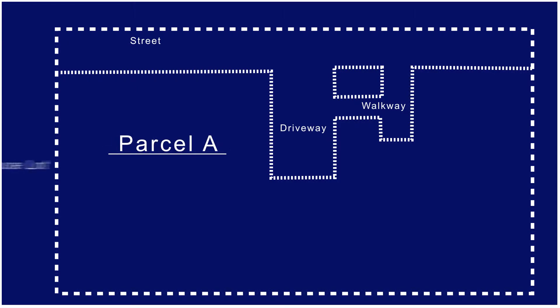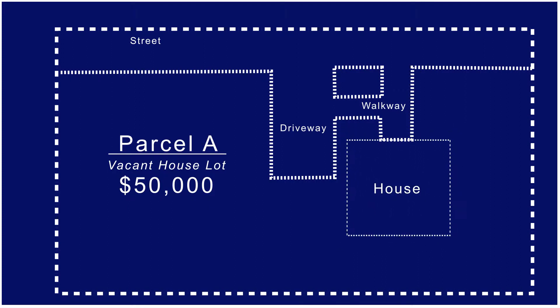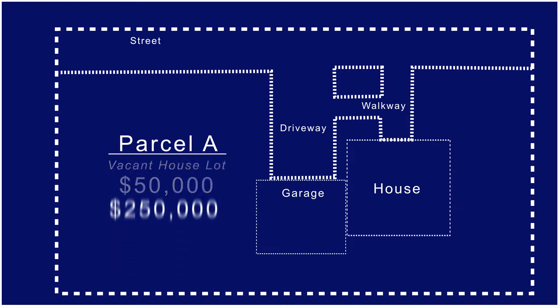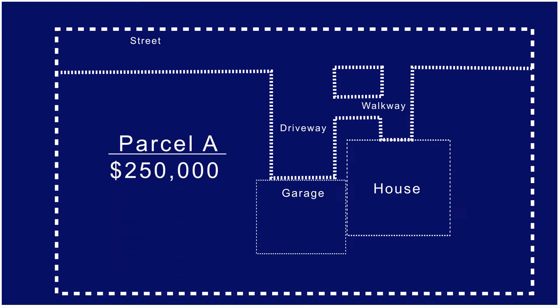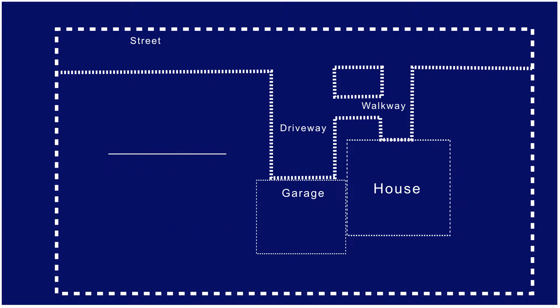For example, last year Parcel A was assessed as a vacant house lot for $50,000. This year, Parcel A has a new house on it and is now assessed for $250,000 — an increase of $200,000. That $200,000 in added value due to the construction activity is included in the calculation of the new growth factor.